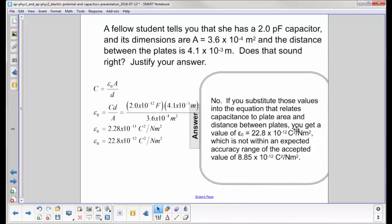So that's what we find epsilon 0 to be equal to, right here. However, the real epsilon 0 is 8.85 times 10 to the minus 12th, and you can see that's why we converted this to 10 to minus 12th, so we can more easily compare them. This is not within an expected accuracy range, so no, that does not sound right.